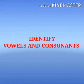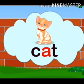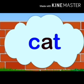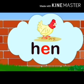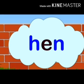Now let us identify the vowels and consonants. This is a cat — in this word, A is a vowel and C and T are the consonants. The next word is Hen — in this word, E is the vowel and H and N are the consonants.